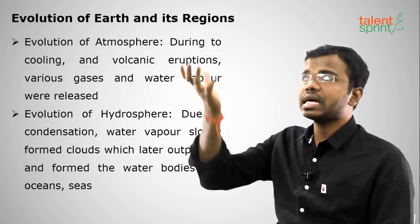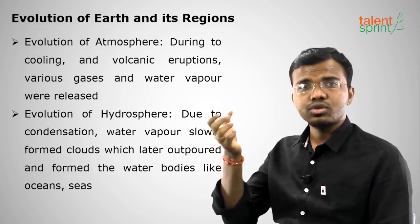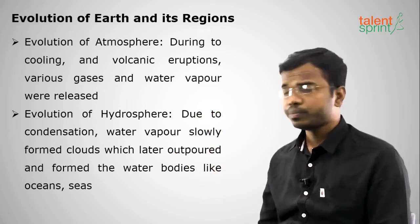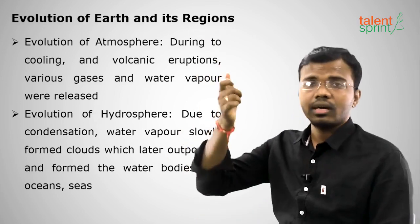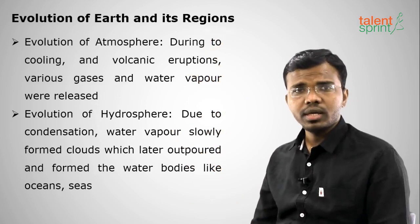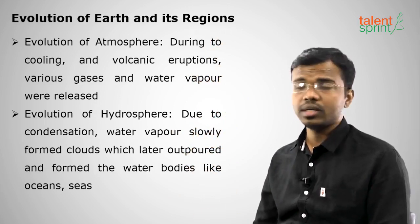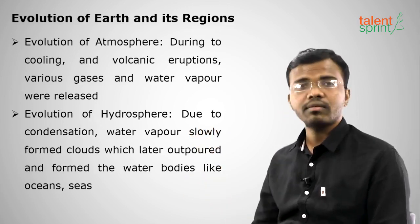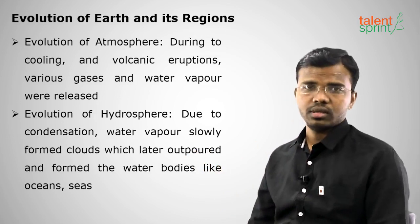How was the hydrosphere — our water — developed? When these gases escaped into the atmosphere and temperatures cooled down, the gases condensed and became liquids. They fell as rain, precipitation, or snow. Our oceans and seas were formed because of the precipitation caused by the condensation of these gases. This is about the evolution of the lithosphere, hydrosphere, and atmosphere.